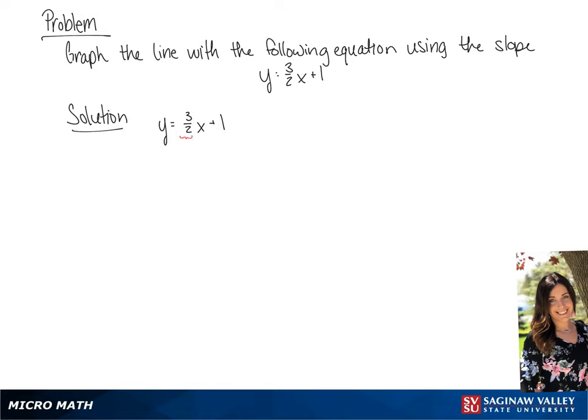And we're going to find the y-intercept. So we're going to have y equals 3 halves times 0 plus 1. So the y-intercept will be 0, 1.